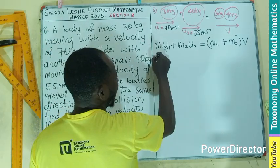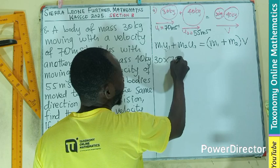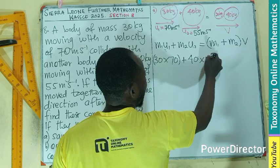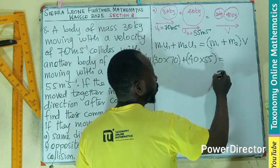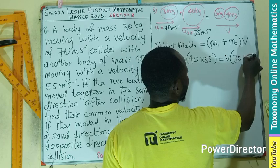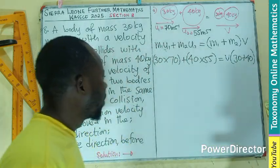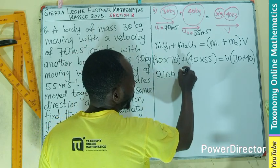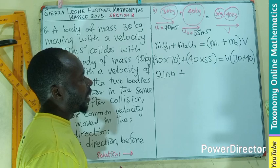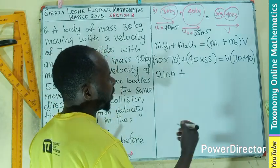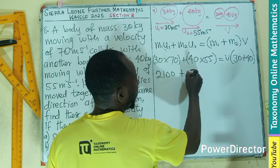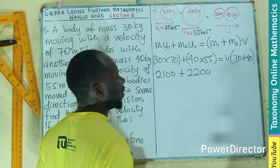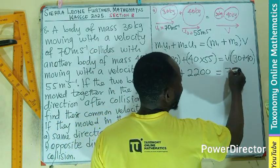By substitution, we can have our 30 kg times 70 plus 40 kg times 55 equals to V multiplying 30 plus 40 kg. And in that case, when you multiply, you have 2100. When you multiply this, this would be 2200. So that would be 2100, then 2200. So that would be equals to 70 times V.